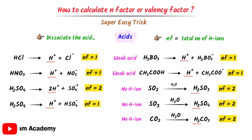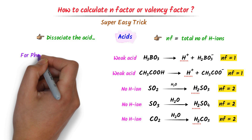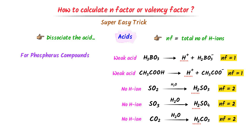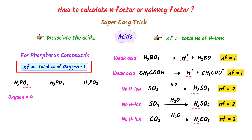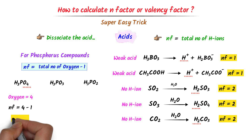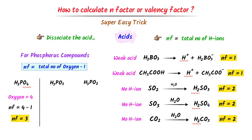Just remember that for these three compounds we always add water to them. Now for phosphorous compounds we use this common trick: n-factor equals total number of oxygen minus 1. For example, in case of H3PO4, the total number of oxygen is 4, so n-factor = 4 − 1 = 3. In case of H3PO3, the total number of oxygen is 3, so n-factor = 3 − 1 = 2.